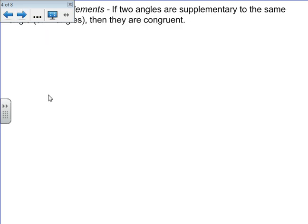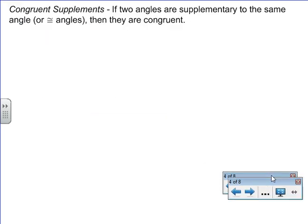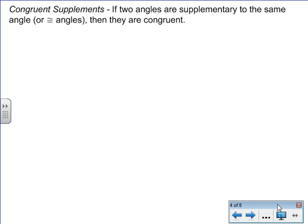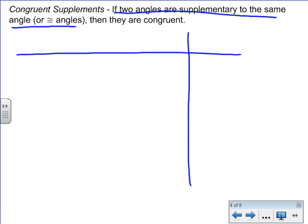When proving the congruence supplements theorem, we always are looking for what is in the if statement. The if statement, whenever we have a conditional, is always going to be our given. In this case, I'm going to do a column proof here, and our first statement is going to be about supplementary angles.